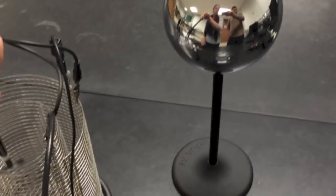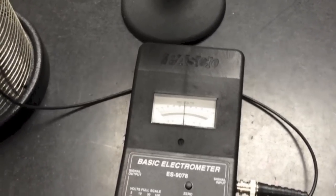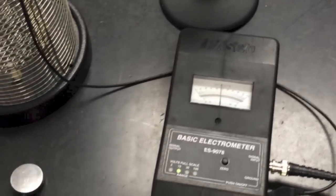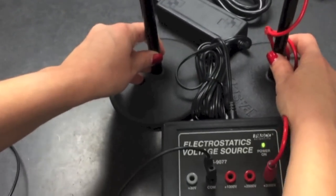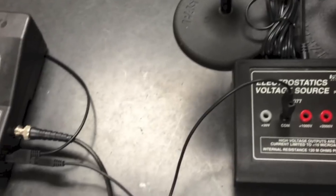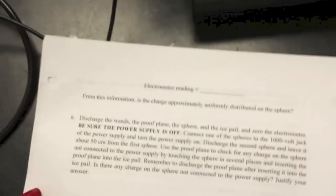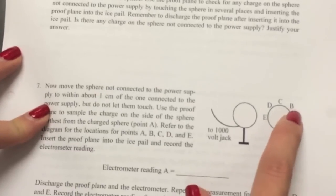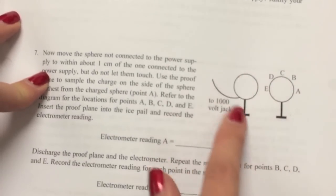Now let's move the spheres really close to one another without touching. Use the silver faced wand and sample the charge on the sphere at points A, B, C, D and E and record that into your laboratory manual.